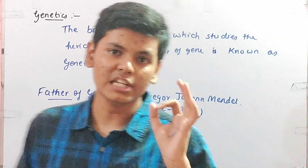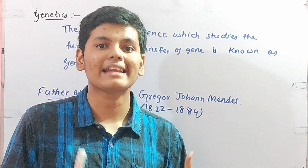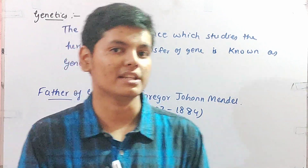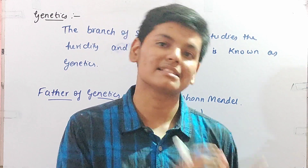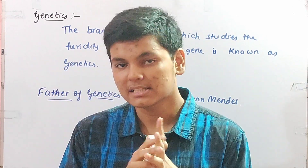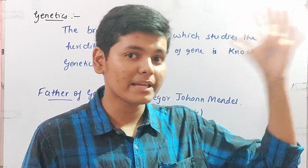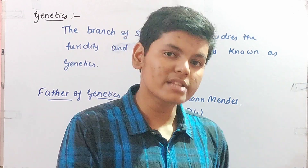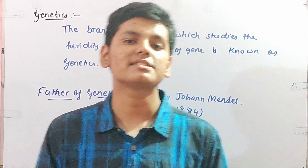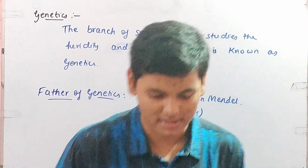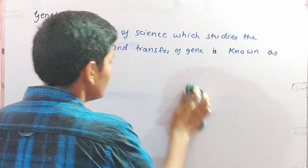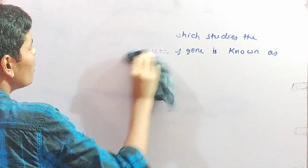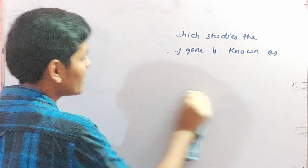Gregor Johan Mendel gave three laws: law of dominance, segregation, and independent assortment. Now we are going to learn about the different types of alleles. We have learnt about recessive and dominant alleles. But when you combine both the alleles, they form two types: we saw capital B capital B, and capital B small b. Now we will learn about homozygous allele and heterozygous allele.